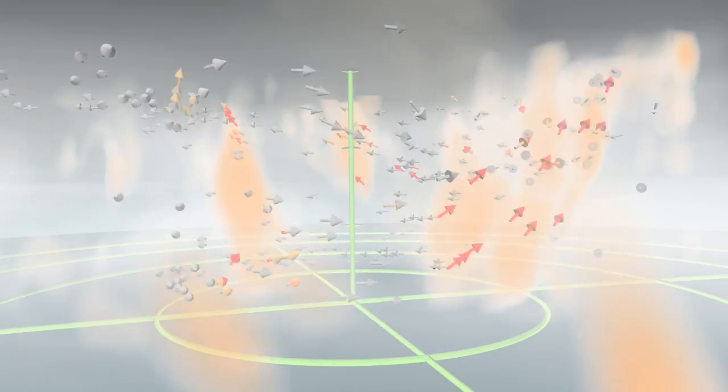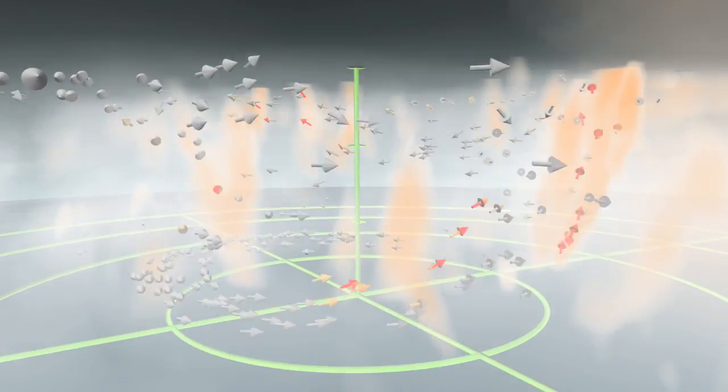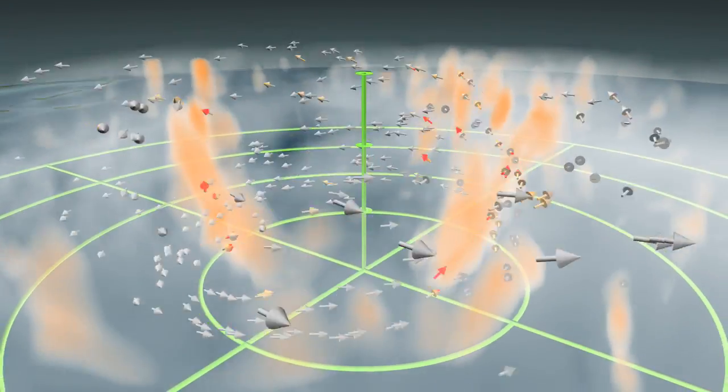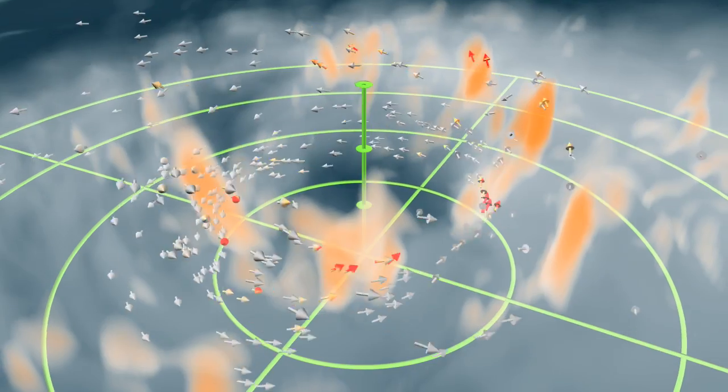But it's more complicated than that, because hot towers move with the hurricane, and there are often multiple updrafts. When air passes into a hot tower, it rapidly rises higher.